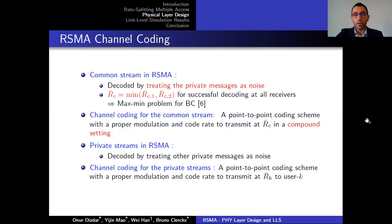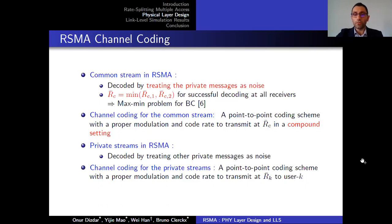For the private streams, each stream is decoded by treating other private messages as noise. Therefore, we can directly use a point-to-point coding scheme to transmit at rates approaching the capacity to each user.